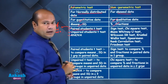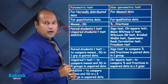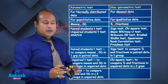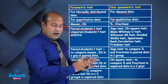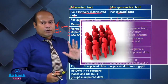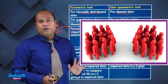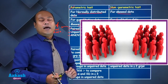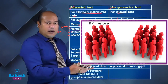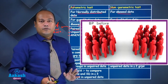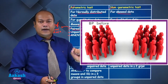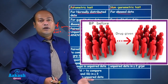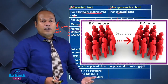What is the meaning of paired data? Paired data means before intervention and after intervention. Suppose you have a group of 100 individuals and you have recorded their blood pressure. Now you give them an anti-hypertensive drug and then record their blood pressure again after 40 to 72 hours.